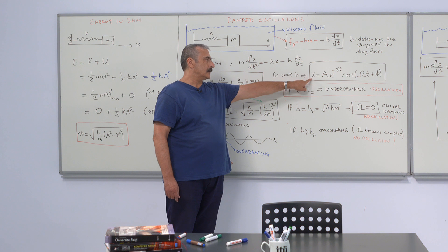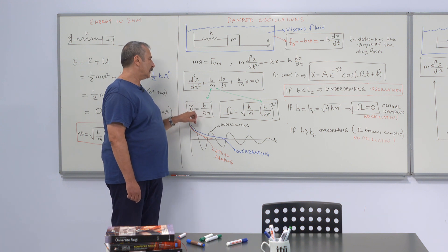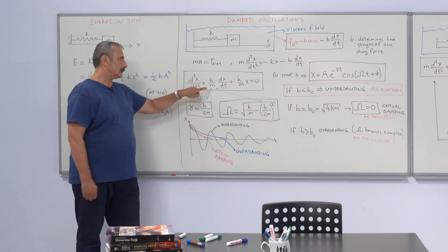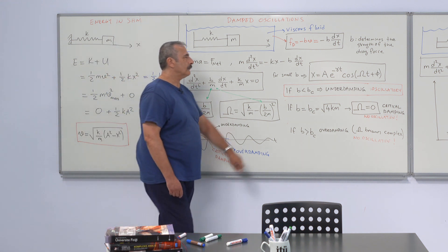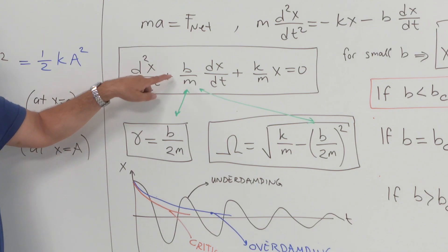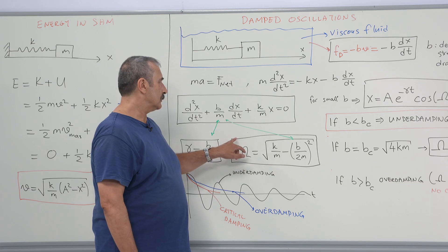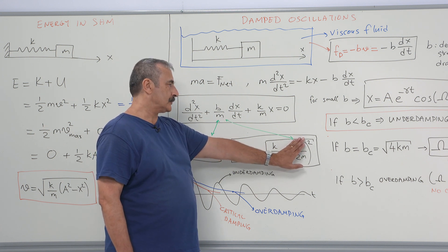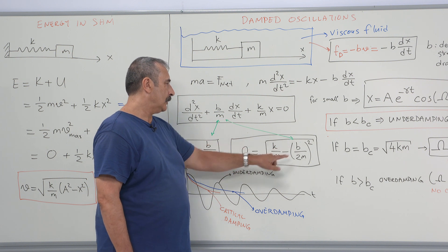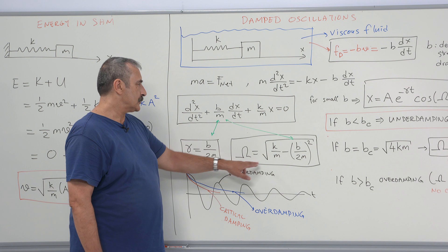Taking the first and second derivatives and inserting into the equation of motion, we can solve for gamma and omega. Gamma equals b over 2m — that is why the equation of motion is written in that form. Gamma is the damping coefficient, equal to one half of the coefficient of the first derivative. The angular frequency is also affected by the drag force: if b were zero, we would have the square root of k over m, but the existence of b degrades the angular frequency somewhat.